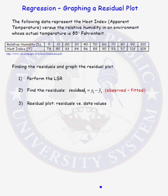In this lesson we will construct a residual plot and use that plot to determine whether we have a good least squared regression model or not. The data that we'll use to construct our least squared regression line is given in the table. The data is the heat index or the apparent temperature versus the relative humidity in an environment whose actual temperature is 85 degrees Fahrenheit. We want to try and predict the heat index from the relative humidity in the room.